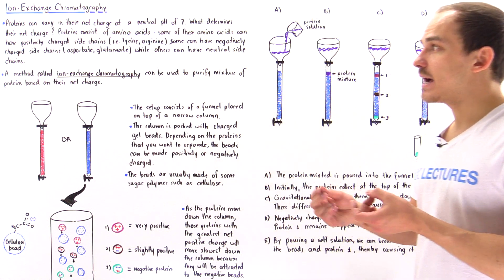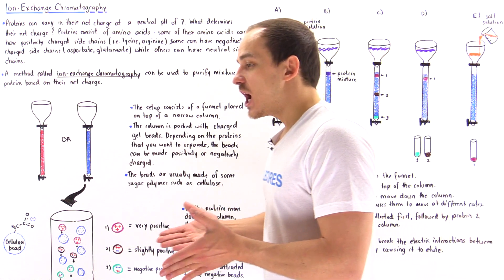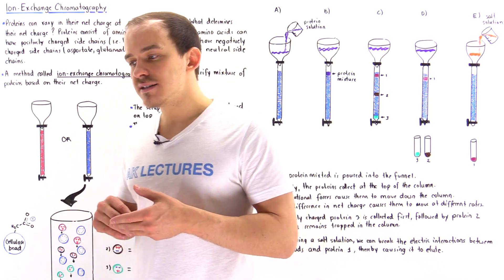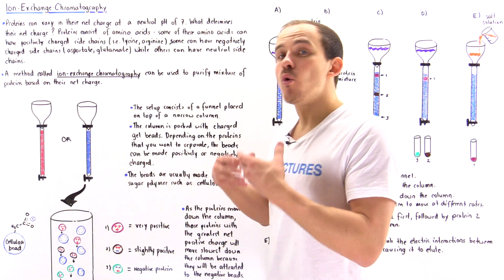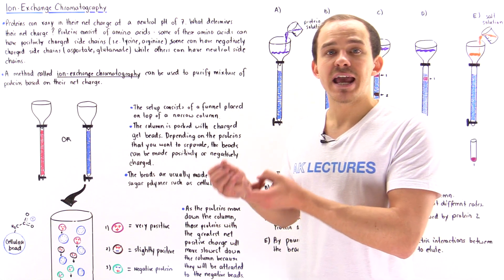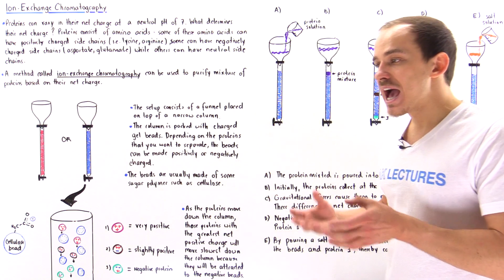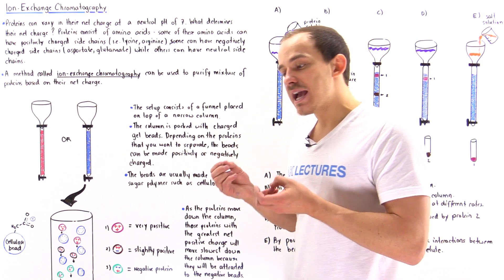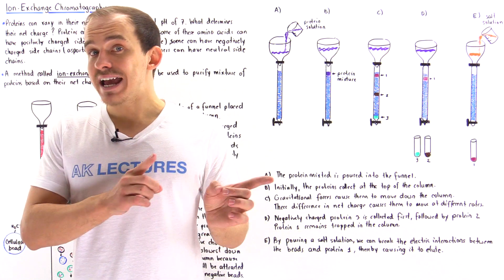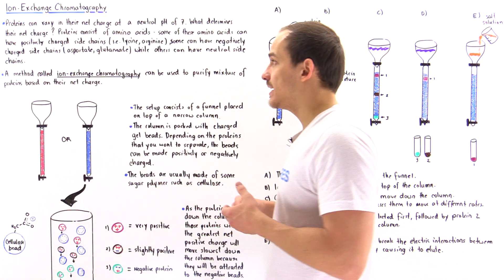Because proteins are composed of a variation of these different amino acids, the ones that have more side chain groups that are positively charged end up having a net positive charge. While the ones with equal amounts have a net neutral charge, and those that have more negatively charged side chains have a net negative charge.